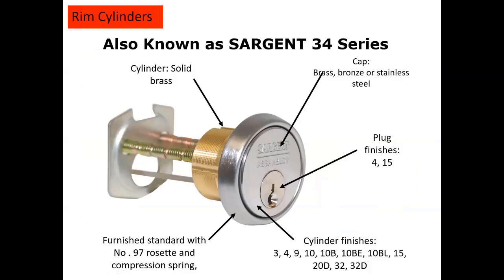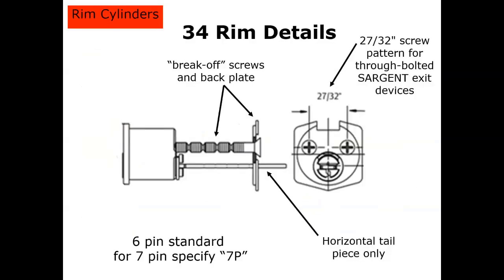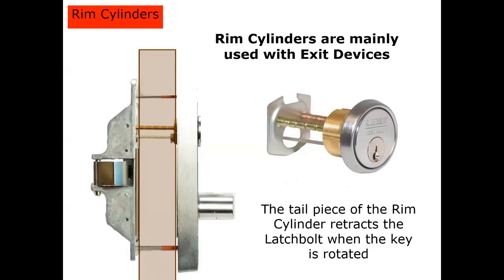Our next slide shows our rim cylinder — again, it's made of solid brass. We put a cap on it: bronze, brass, or stainless steel. The plug is in two finishes. We offer over a dozen different finishes, and when the cylinders are ordered less hardware or by themselves, we include a number 97 Rosetta standard. The screw hole pattern is unique for Sargent, whereas when this rim cylinder is used with the Sargent 8800 series X device, the two screws actually through-bolt through the inner chassis right into the rim cylinder. The screw hole pattern of 27/32nds is unique for Sargent. All our tail pieces are horizontal.